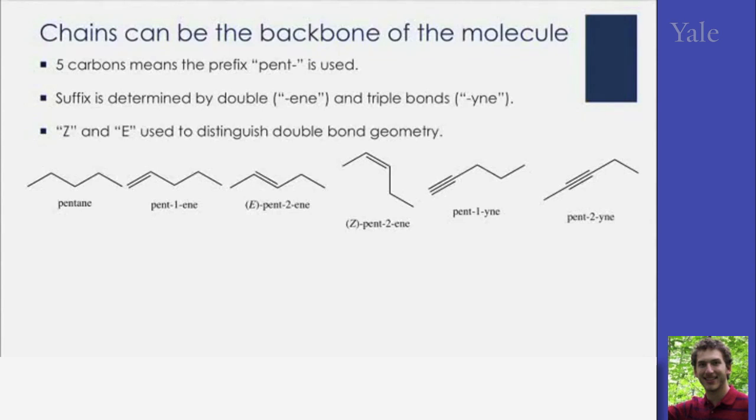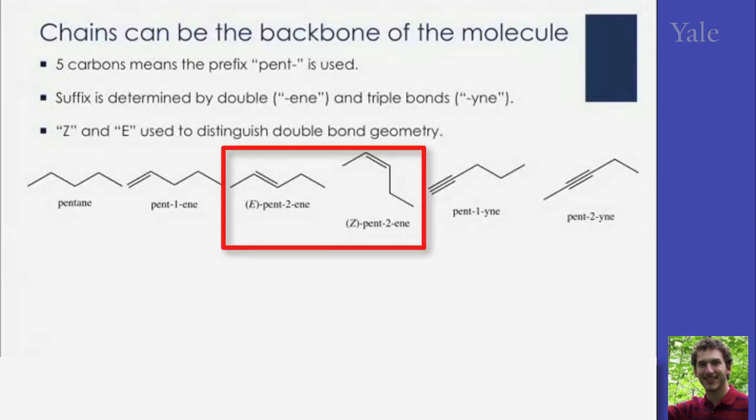Now we also need to specify the geometry of these double bonds if they're internal to the chain. If they're on the end, as in pent-1-ene, we don't need to say anything. If they're on the inside, there are two different geometric forms, the E and the Z, and that needs to be reflected in the name.